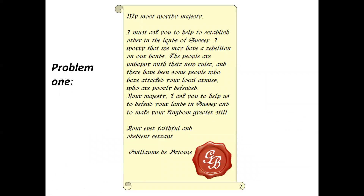Issue number one: 'My most worthy majesty, I must ask you to help establish order in the lands of Sussex. I worry that we may have a rebellion on our hands. The people are unhappy with a new ruler, and there have been some people who have attacked your local armies, which are poorly defended.' So the first problem is that the men William is using to control the country are getting attacked — they need some kind of defence.